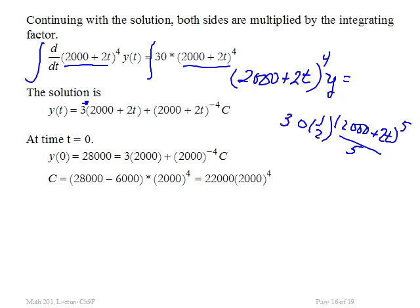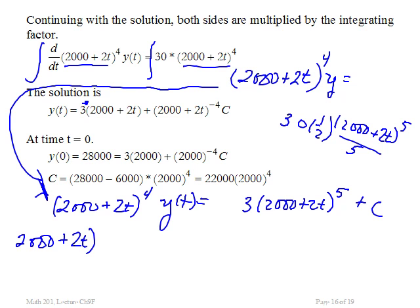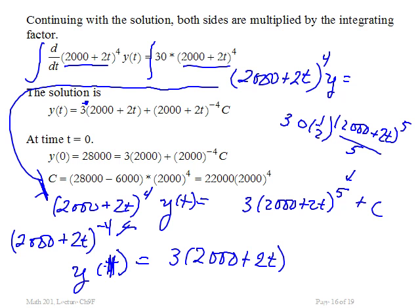Now I'm going to multiply both sides. I've got 2,000 plus 2t raised to the 4th power times y, and I want y separated out by itself. I have 3 times 2,000 plus 2t raised to the 5th plus some constant c. So if I multiply both sides by 2,000 plus 2t to the minus 4th, I multiply this side by it and end up with just y(t). And when I multiply over here, it's going to be minus 4 plus 5, so that's going to leave 1. So I've got 3 times 2,000 plus 2t with an exponent of 1, and that constant of integration times 2,000 plus 2t raised to the minus 4th.